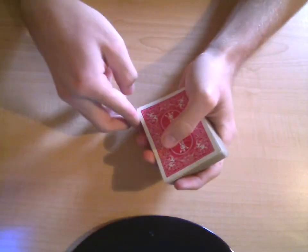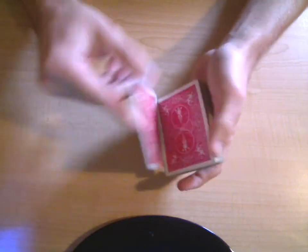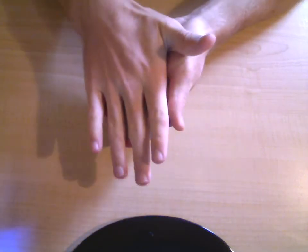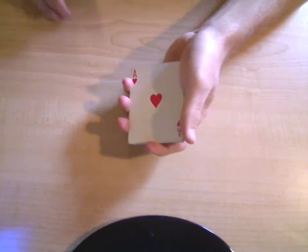So I'll show you guys one more time. Do a double lift. 3 of clubs. Give it a quick rub. And you see, still 3 of clubs. Change to the Ace of Hearts.